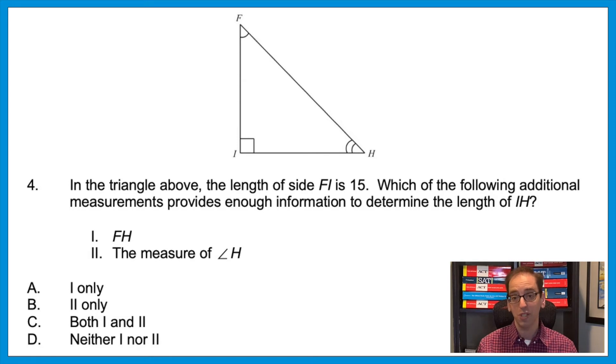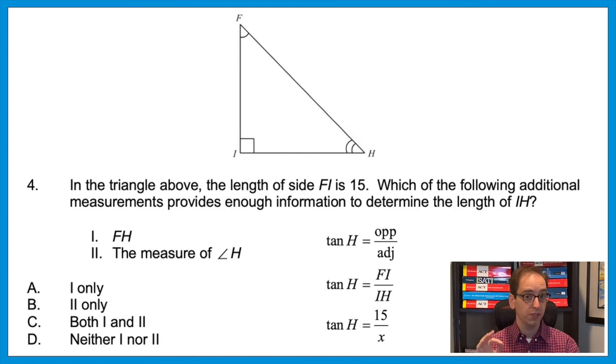Now let's think about statement two. Would angle H give us enough information to solve for IH? Just like the last question, we need to think about the trig ratios. How does the given side FI relate to angle H? It's the opposite. And they're asking us to find IH in terms of H—that's the adjacent. So we have an opposite and an adjacent, so which ratio is in play? Well, think about SOHCAHTOA. We want tangent. TOA is opposite over adjacent. So using the tangent ratio, the tangent of H would be its opposite over its adjacent. And then from there, plugging in that info, that means FI over IH. And then with the numbers, the tangent of H is 15 over x. And now you can manipulate that to solve for x. No math necessary—we don't have to do it. We just need to know that it's possible, and it is. So both statements are true. The answer is C.